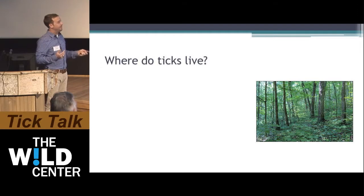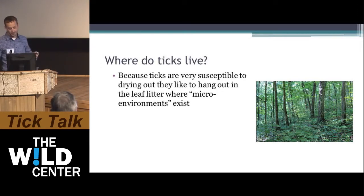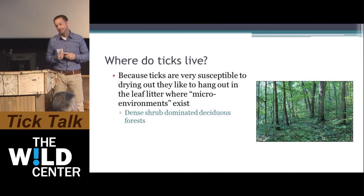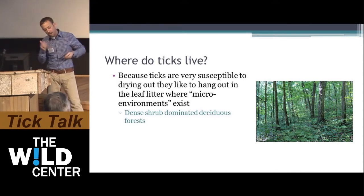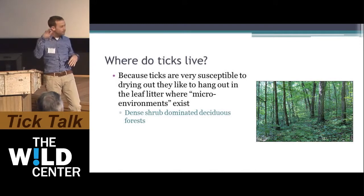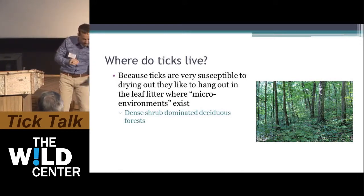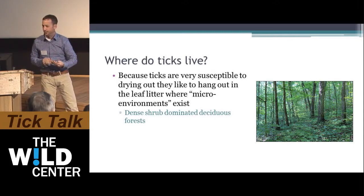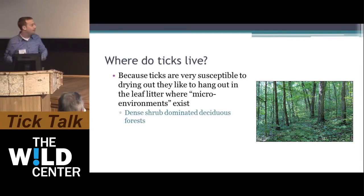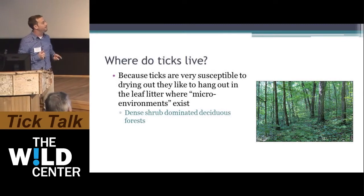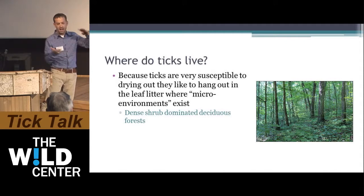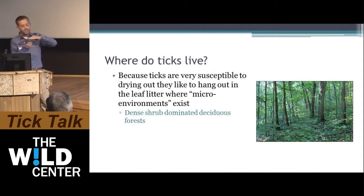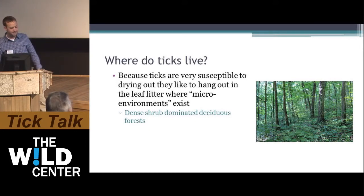So where do ticks live? Areas like this — it looks familiar, everywhere around here. Because ticks are very susceptible to drying out, they like to hang out in the leaf litter. In the leaf litter, we have what we call microclimates. We experience a different climate than the moist, slightly warmer space under the leaf litter where ticks live. The best areas are dense shrub-dominated, old hardwood forests, because they produce a lot of leaves with a moist degrading layer underneath — unlike dry pine forests.